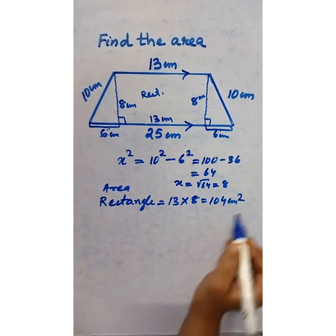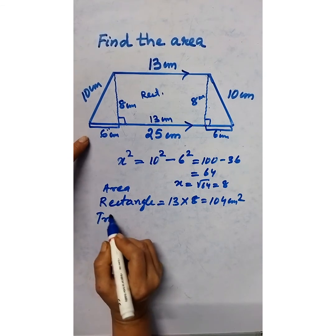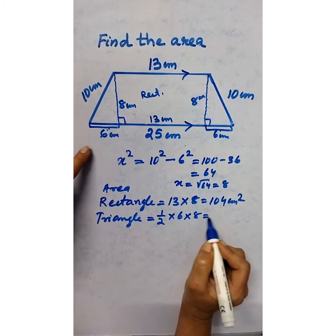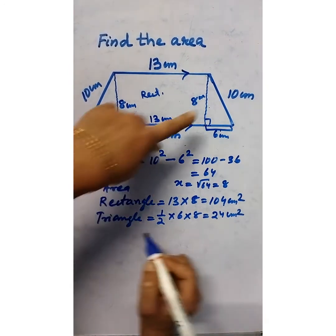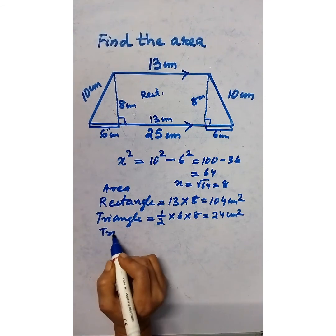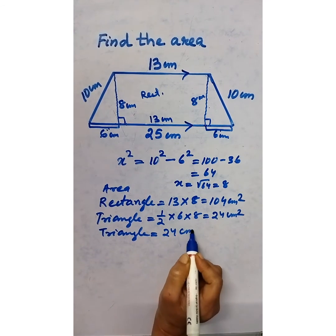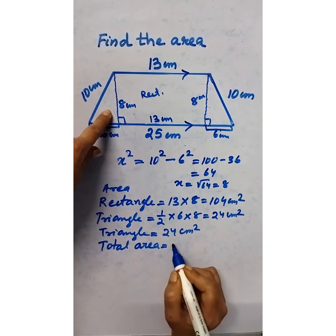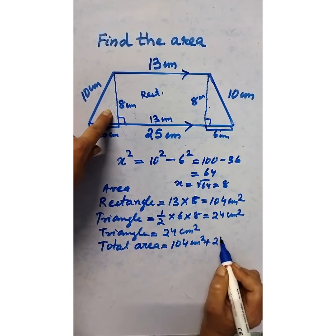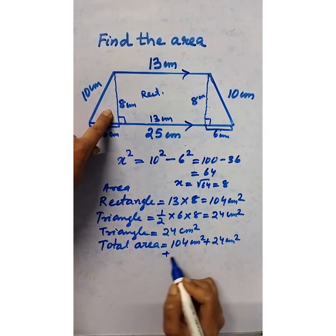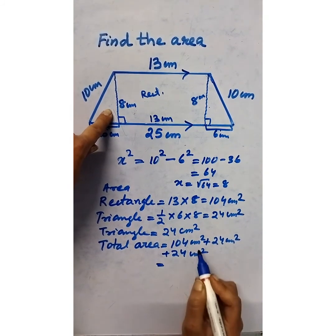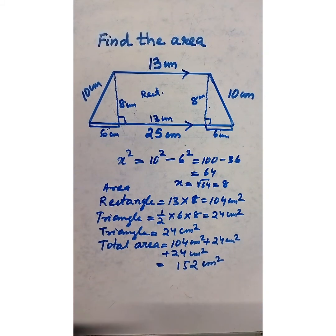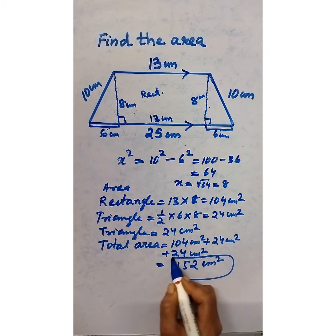Area of each triangle equals half base times height = 24 square centimeters. The other triangle is also 24 square centimeters. Total area equals 104 + 24 + 24 = 152 square centimeters. So this is the area of the given trapezium.